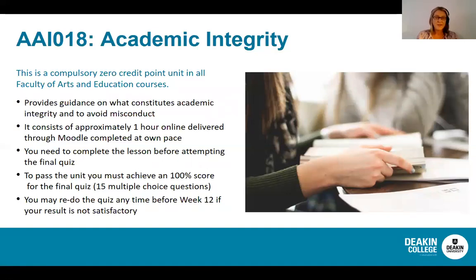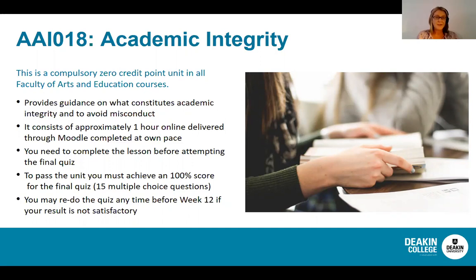All of our diplomas have a unit that focuses on academic integrity. This is a no-credit-point unit, meaning it is not counted towards your final eight, but it is compulsory for all students to complete. It provides guidance on what constitutes academic integrity, how to avoid misconduct, how to reference correctly, how to source images, and how to protect your own work. It takes approximately one hour to complete online at your own pace. To pass the unit, you must complete a quiz of 15 questions with a score of approximately 82%. You may redo the quiz anytime before week 12 if your results are not satisfactory.